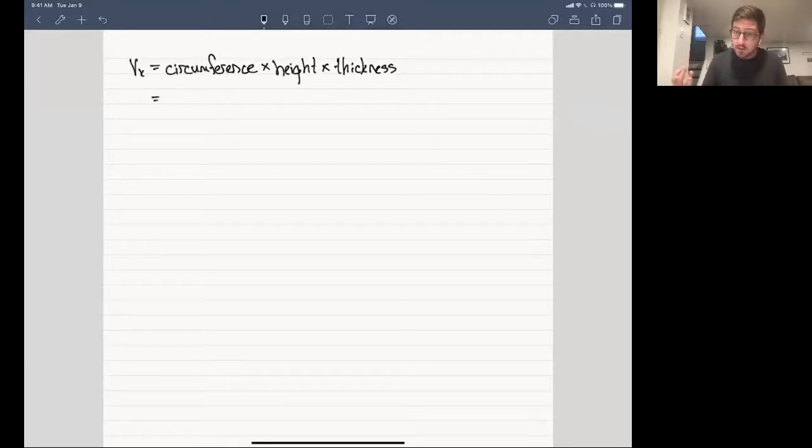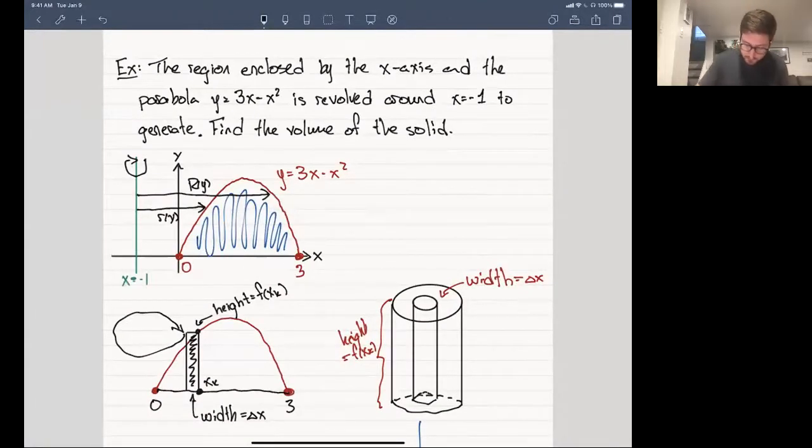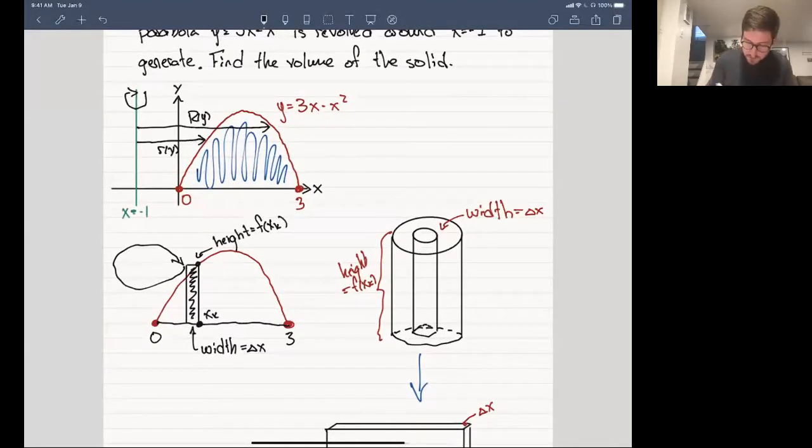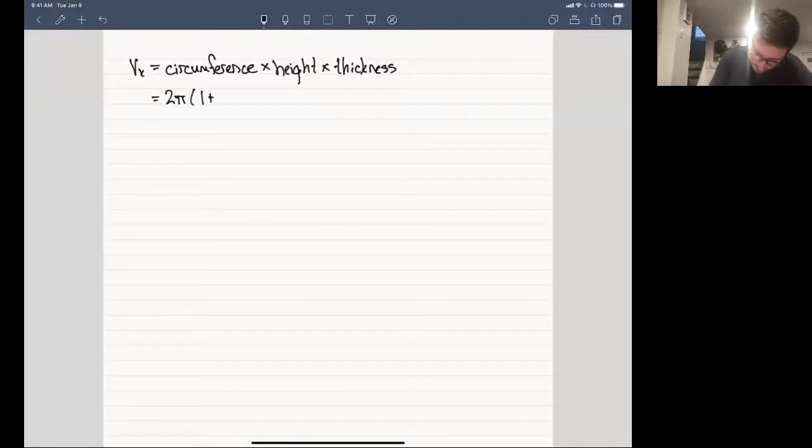So the volume of cylinder k is going to be the circumference times the height times the thickness. The question is, what is the circumference? The radius of this thing is going to be the distance from where you're revolving around all the way up to xk. So the distance is given by xk minus minus one, the distance from xk to minus one. And we remember that the formula for circumference is given by 2 pi times the radius. So that gives us 2 pi times (1 plus xk), multiplied by the height, which is y at xk, so 3xk minus xk squared, and then times our thickness, which is delta x.